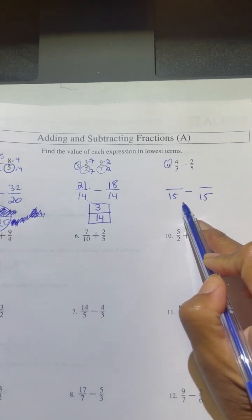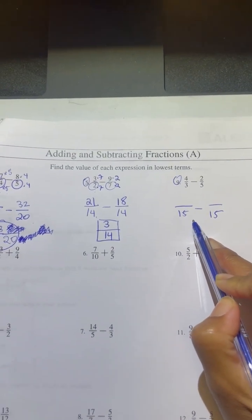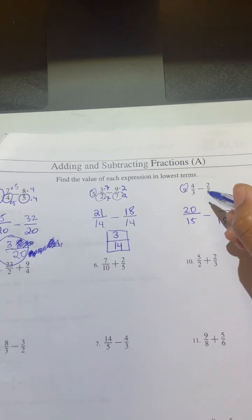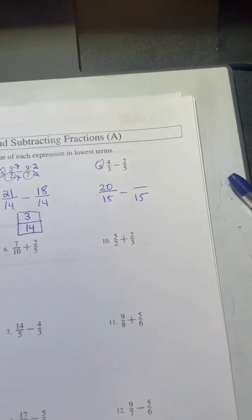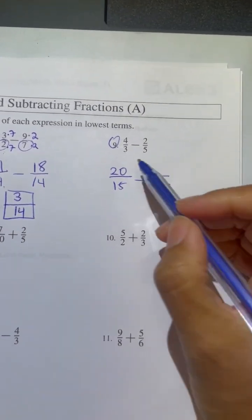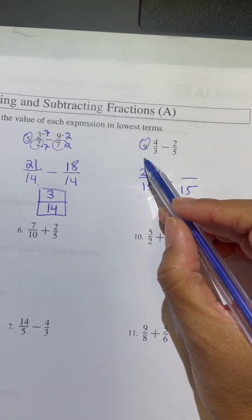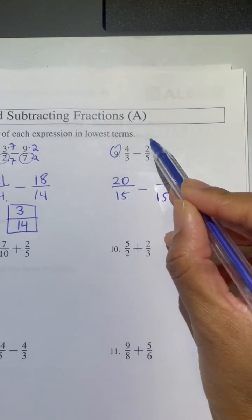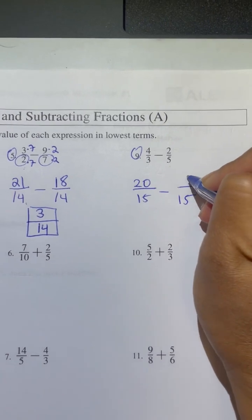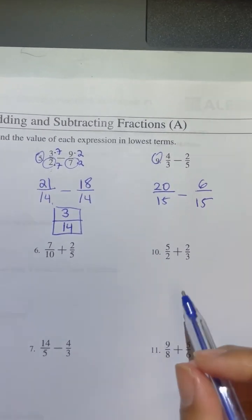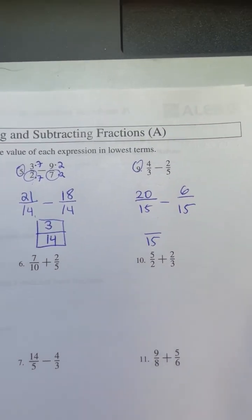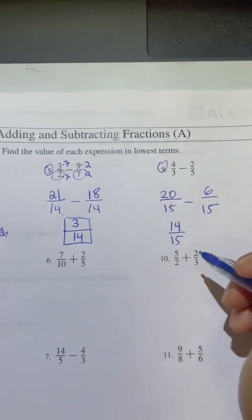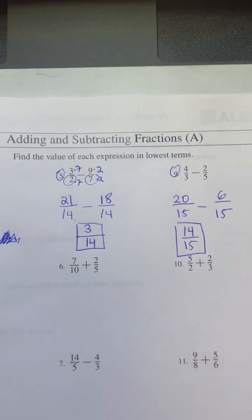3 times what gives me 15? 5. 4 times 5 is 20. So notice I don't even need to write down the 5 in the bottom 5. I'm not going to waste time because as you get faster at this, you don't have to write everything down. 5 times what gives me 15? 3. So 2 times 3 is 6. Keep the denominator the same. The top becomes 14. I can't simplify anymore. That becomes my final answer.